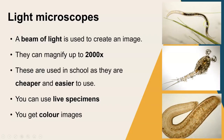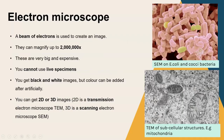The electron microscope creates an image by releasing a beam of electrons. Electrons have a much shorter wavelength than light, which is why we get much higher magnification - we can actually magnify two million times. They are very big, expensive, and much more complicated to use. You can't use live specimens on these microscopes because you need a vacuum for them to work - a vacuum is when you've removed all the air, so nothing living could survive in that.